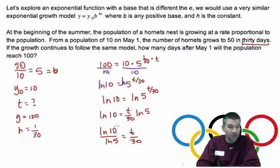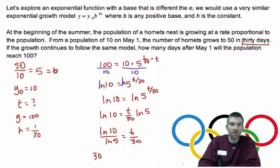And then you'll notice that I can finish this off by multiplying both sides by 30. So, 30 times the natural log of 10 over the natural log of 5 will give me T.